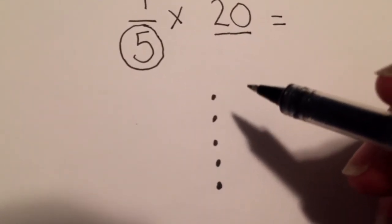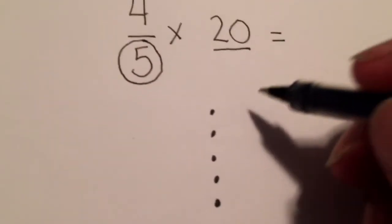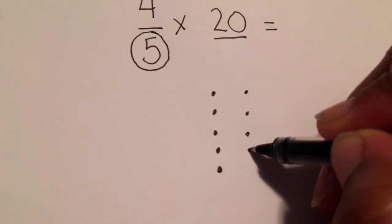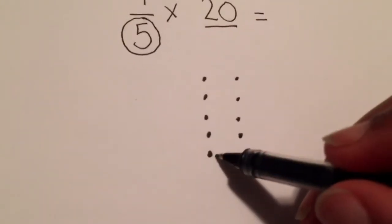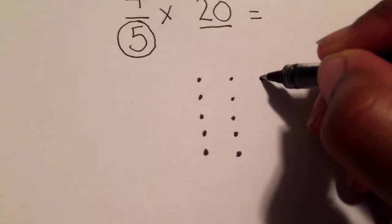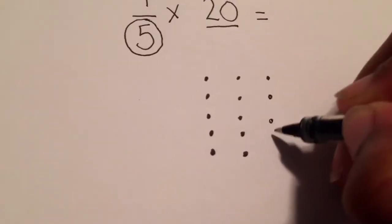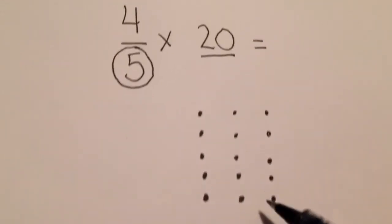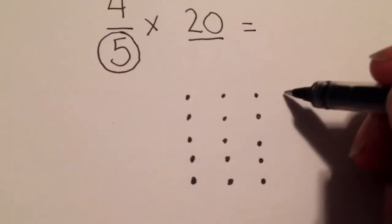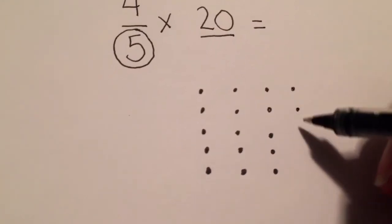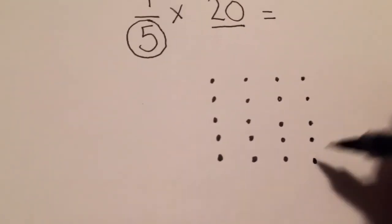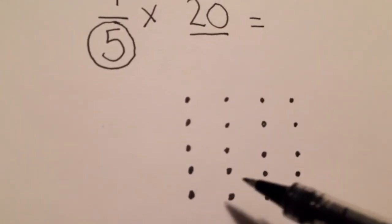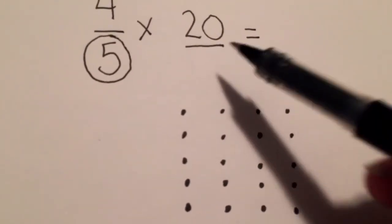So I'm going to start my next column adding the array: one, two, three, four, five. So far I have five, ten. One, two, three, four, five. Five, ten, fifteen. One, two, three, four, five. Now I have five, ten, fifteen, twenty.